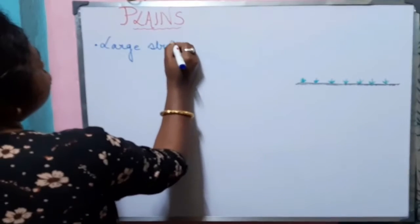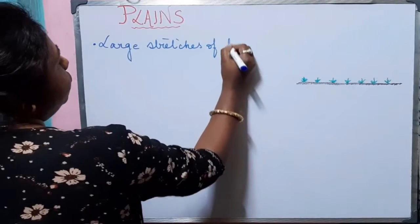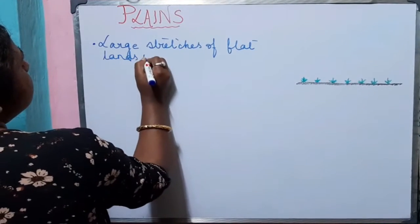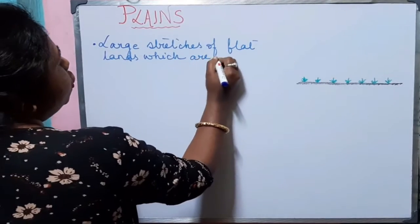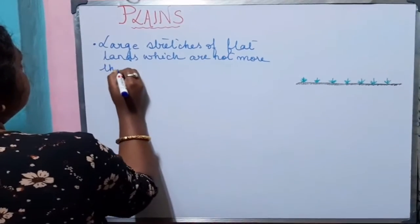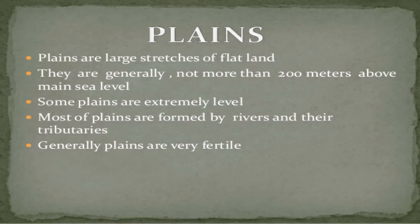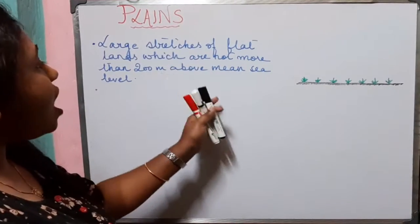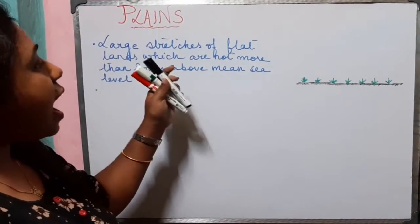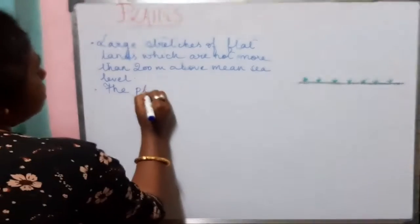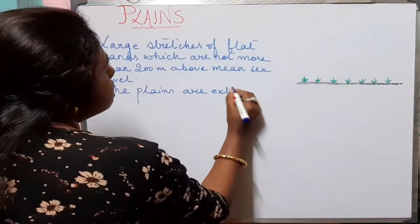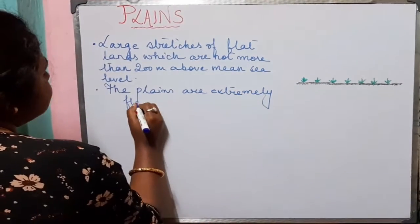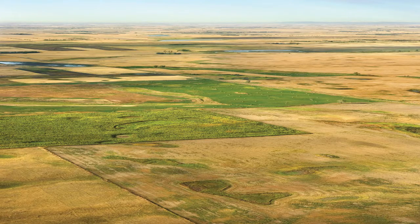So without wasting much of our time, let's get started. What are plains? Plains are large stretches of flatlands which are not more than 200 meters above mean sea level. The plains are extremely flat lands.